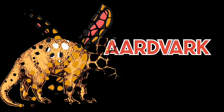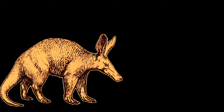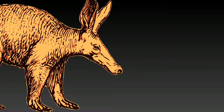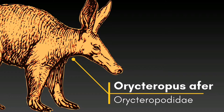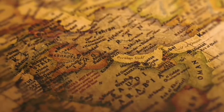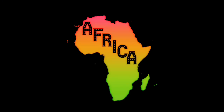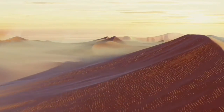Aardvark, also called the ant bear, has the scientific name Orycteropus afer. It is a species in the mammal family Orycteropodidae. Aardvarks are found throughout Africa, south of the Sahara Desert.